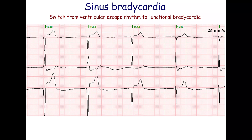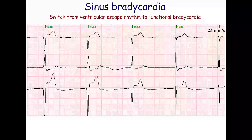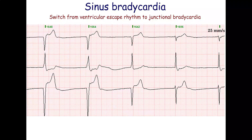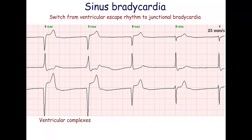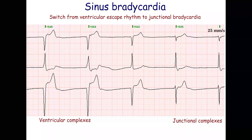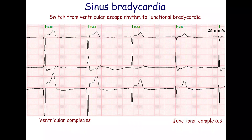This ECG shows a switch from a ventricular escape rhythm to junctional bradycardia. The rate is 36 beats per minute. The first and second QRS complexes are wide, indicating a ventricular origin. The last two QRS complexes are narrow, indicating a junctional origin. The morphology of the third QRS complex is intermediate; this is a fusion beat.